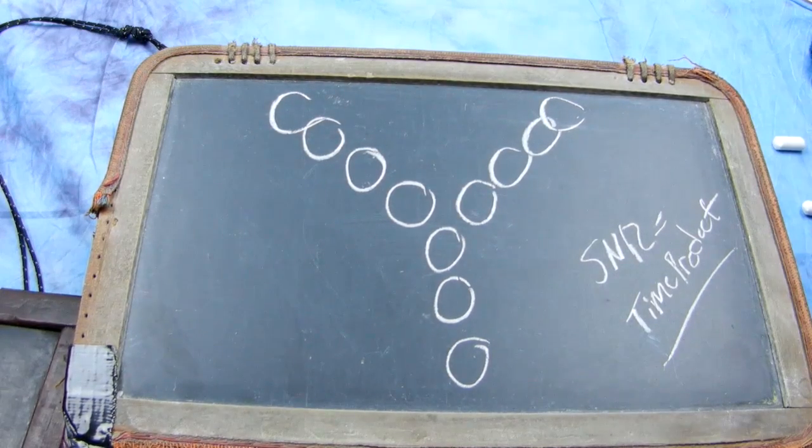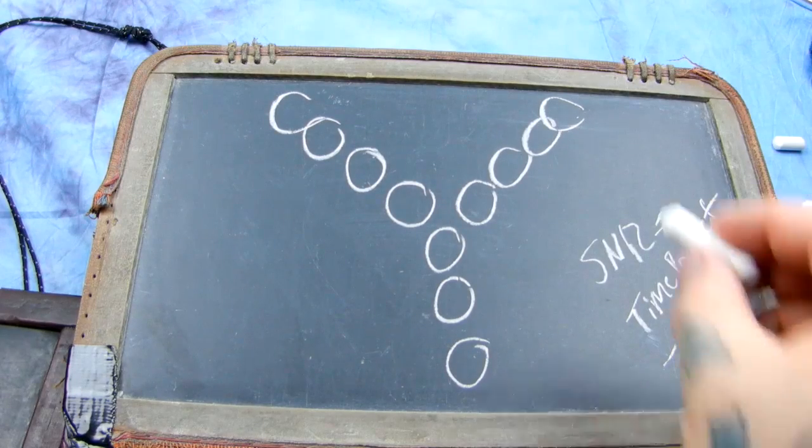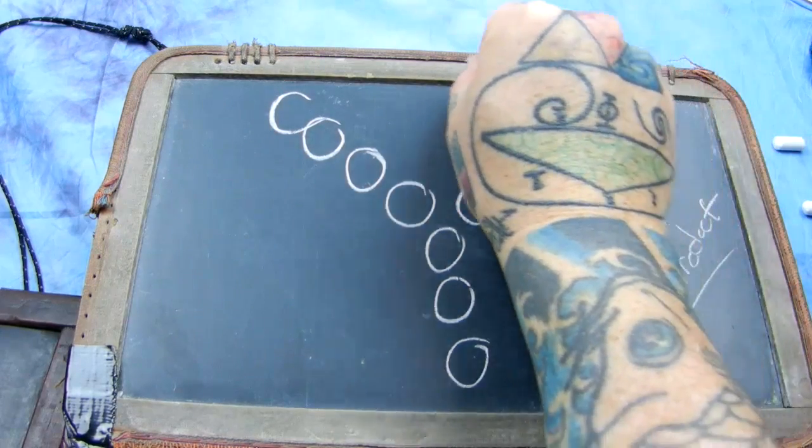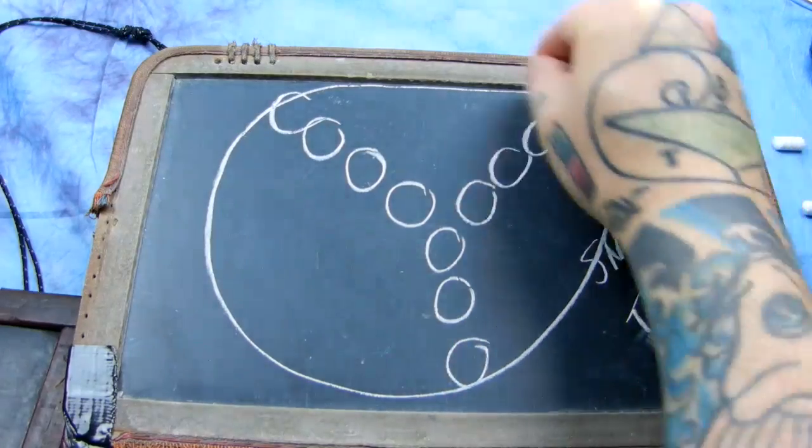You know the satellite dishes that are out in the desert. There's a huge array. It's called the VLA, the Very Large Array. They're huge satellite dishes.